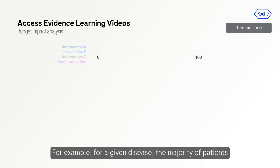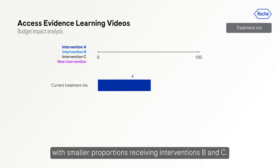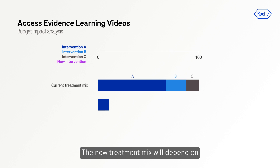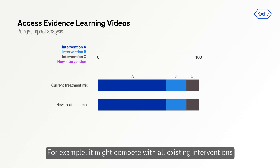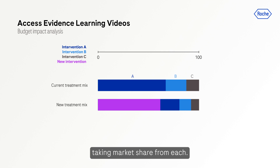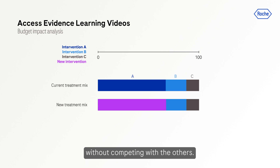For example, for a given disease, the majority of patients may currently receive Intervention A, with smaller proportions receiving Interventions B and C. The new treatment mix will depend on the positioning of the new intervention. For example, it might compete with all existing interventions, taking market share from each. Or perhaps the new intervention will replace one of the existing ones, say Intervention A, without competing with the others.